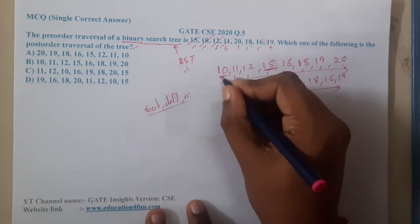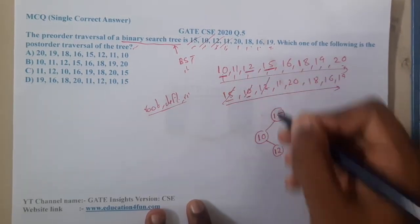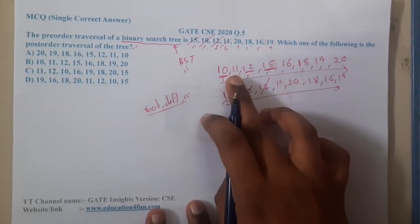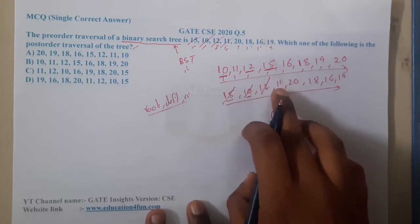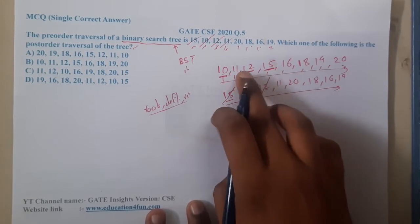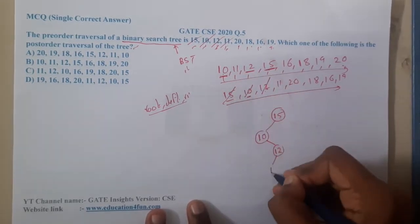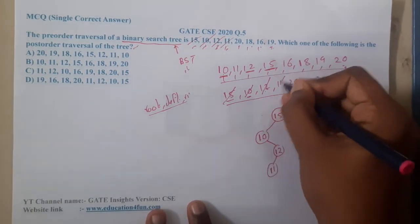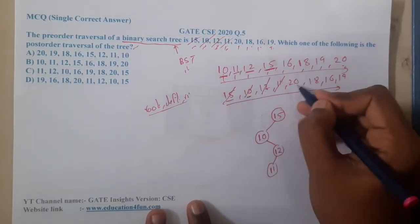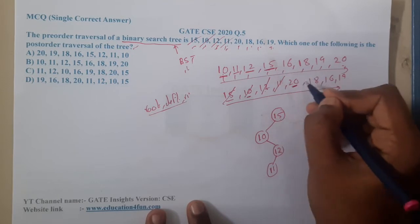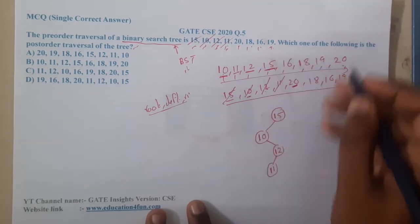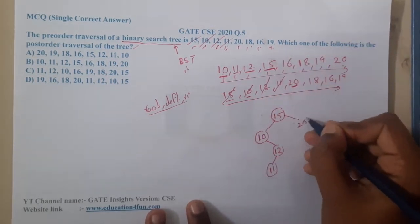Now 12 is done. Where is 11? 11 is on the left of 12, so it will be here. 11 is also done. Now where is 20? 20 is on the right of 15, so it will be here. 20 is done.